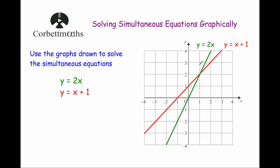So in this case, y equals 2x, the green line, y equals x plus 1, the red line, and we just need to find where they meet.